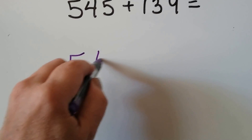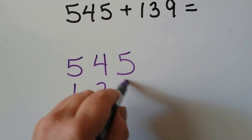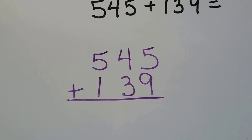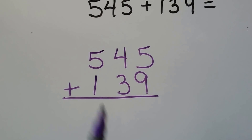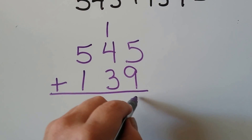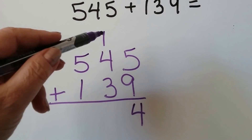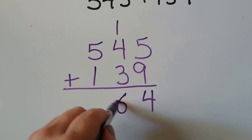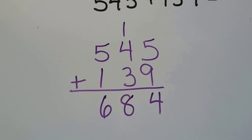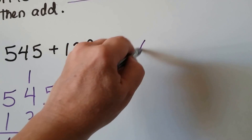So let's do that. We have to make sure we keep our place values straight. We add the ones: we count up to 14. We regroup the 1 and put the 4 down. We add the tens: 4 plus 1 is 5, then 6, 7, 8. That gives us an 8. And we add the hundreds: 5 plus 1 is 6. We have 684.